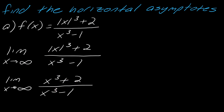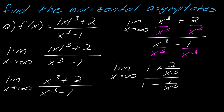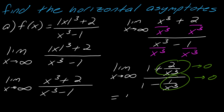Now that it looks like a rational expression, I can use the technique of dividing everything by the highest power of x, which is x cubed. All of this simplifies to 1 plus 2 over x cubed in the numerator and 1 minus 1 over x cubed in the denominator. The parts being divided by x are both going to 0. If you need an explanation of why, check out some of my other videos on that.